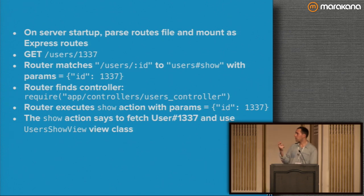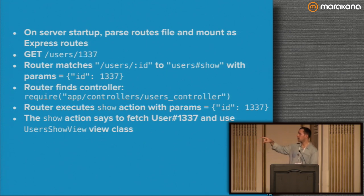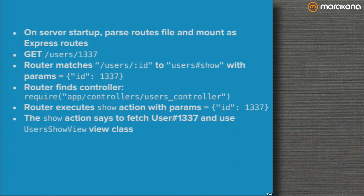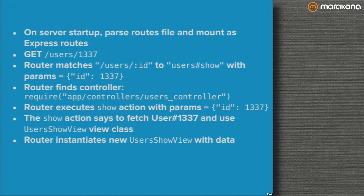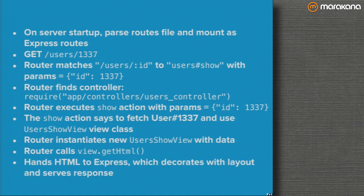The router executes the show action on the Users controller and passes in the params. The action has two responsibilities: fetching the data and specifying which view to render. In this case it fetches User 1337 and uses the UserShowView class. The router then creates a new instance of UserShowView, injects the data, and calls getHTML on that view instance — which evaluates the template with the data and returns the outer HTML of the view. Express decorates that with the layout and serves it.